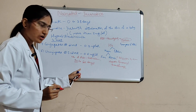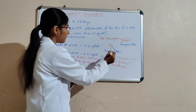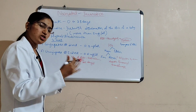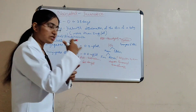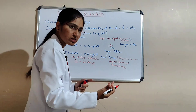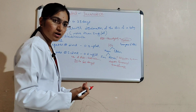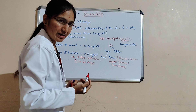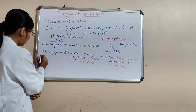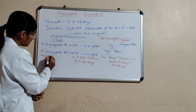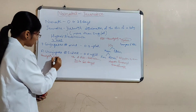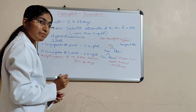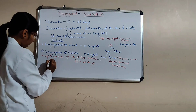That is why hemolysis occurs. The RBCs continuously break down via hemolysis. The end product of hemolysis is bilirubin. So hemolysis produces bilirubin continuously in the neonate.